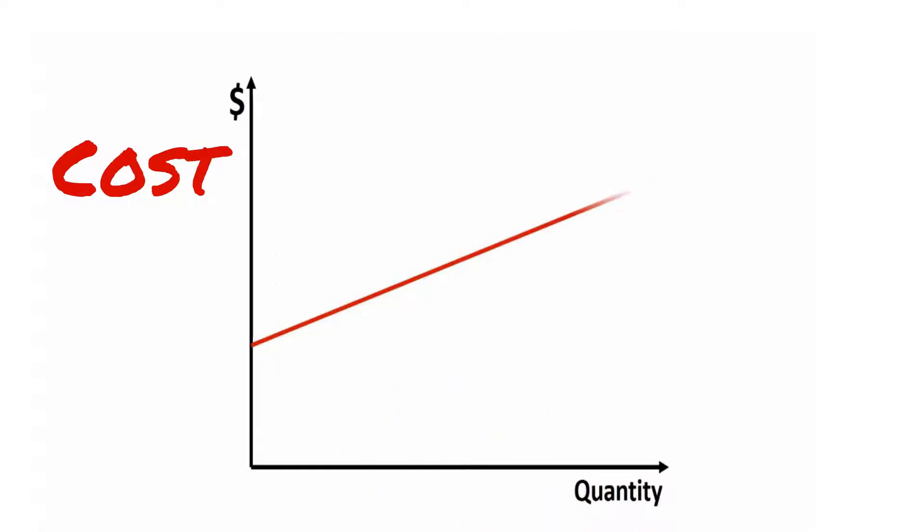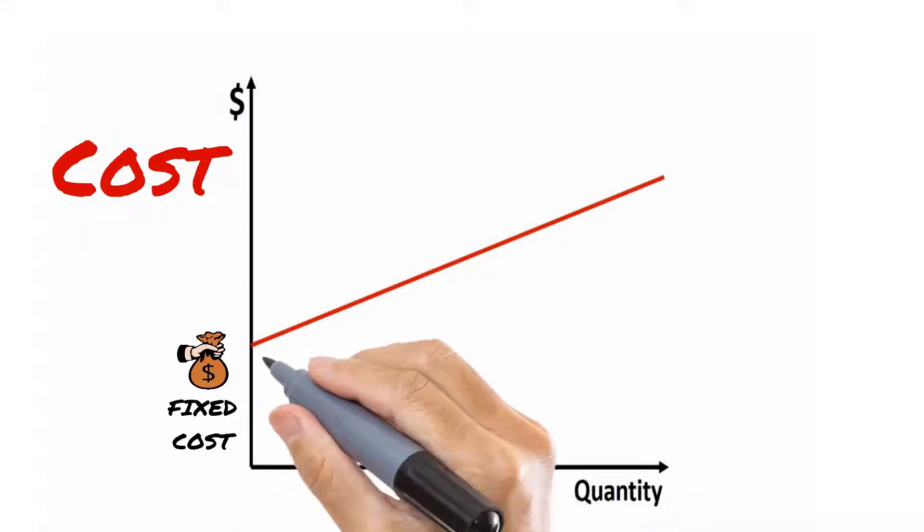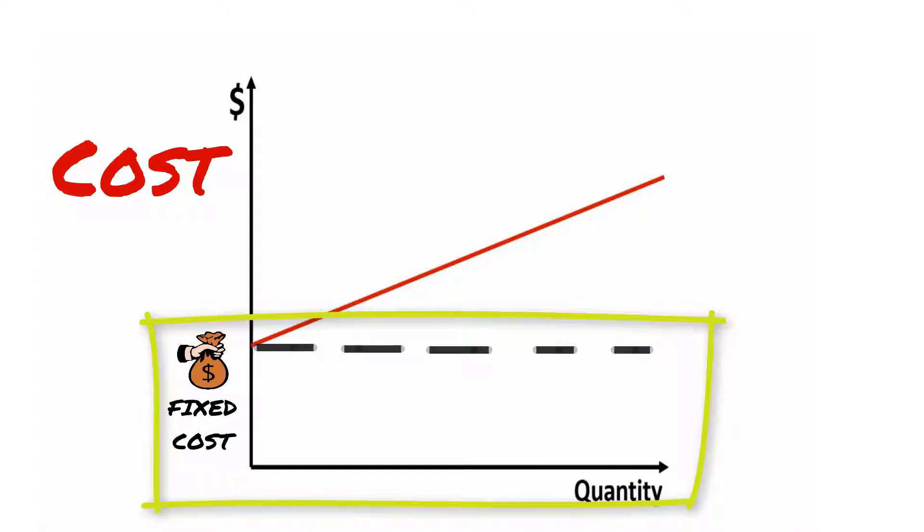Visually, we can draw a graph that relates cost and quantity. You can see that the fixed costs are constant regardless of the quantity produced. On the other hand, variable costs increase with the quantity produced.